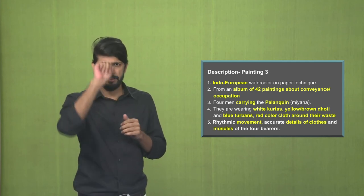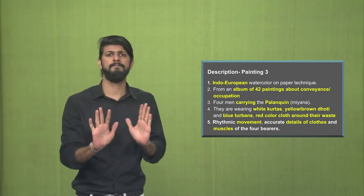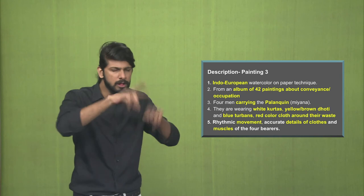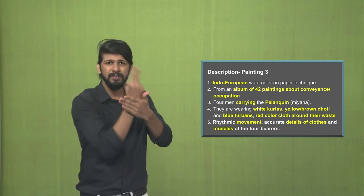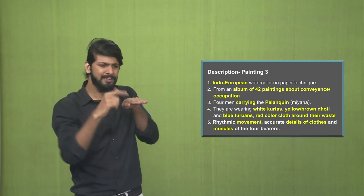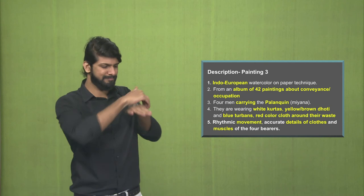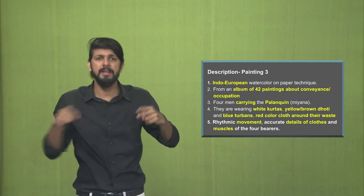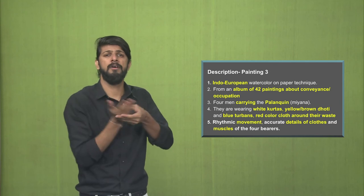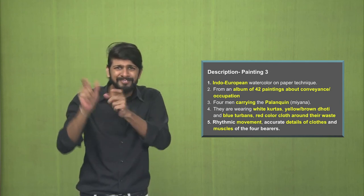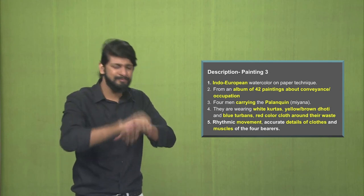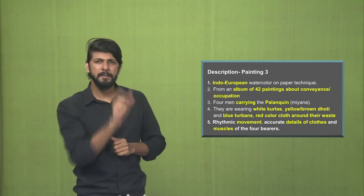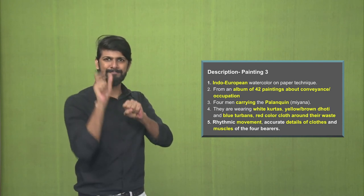Let us quickly understand the description and details of the third painting. This technique is a mix of Indo-European. That's Indian and European watercolor techniques on paper. This is from an album of 42 paintings about conveyance, various kinds of conveyance and occupation. The album had paintings of various kinds of occupations and conveyance found in India at that time.